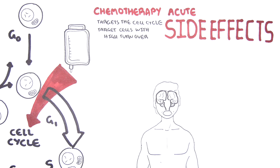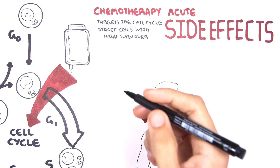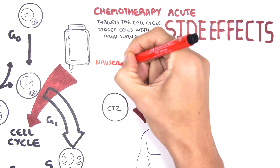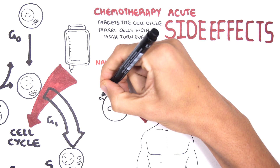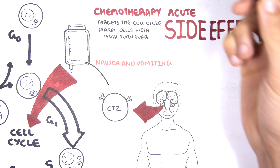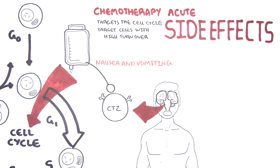The first and most common side effect of chemotherapy drugs is nausea and vomiting. If we zoom into the medulla of the brain stem, it contains an area called the chemoreceptor trigger zone. Chemotherapy toxins target the chemoreceptor trigger zone because these toxins circulate in the blood, and the CTZ is not within the blood-brain barrier, so these toxins can stimulate it.